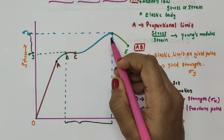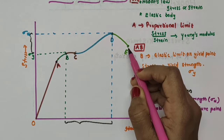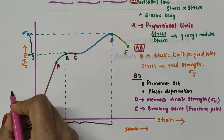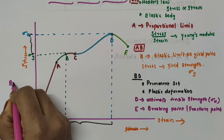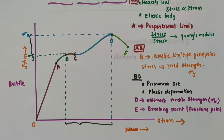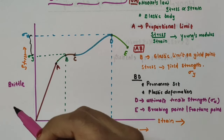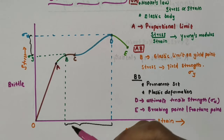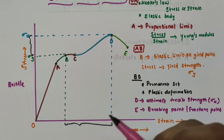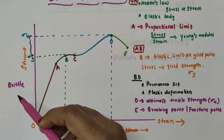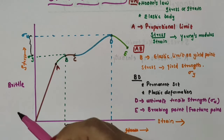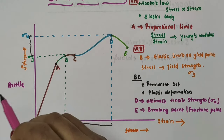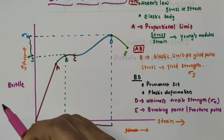If the ultimate strength point D and the fracture point E are close, then the material is said to be brittle. Examples of brittle materials are glass, ceramic, etc. They have extremely low plasticity — cracking can initiate without plastic deformation. When a brittle material is subjected to stress, it breaks with little elastic deformation and without significant plastic deformation. Its breaking is often accompanied by a snapping sound.